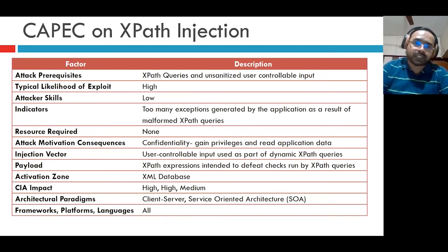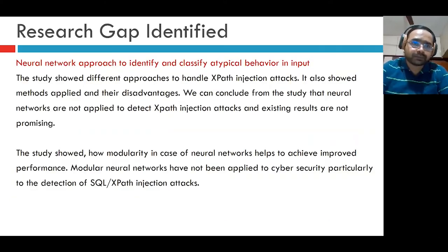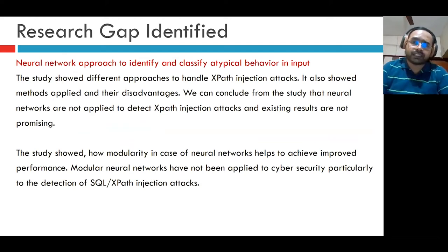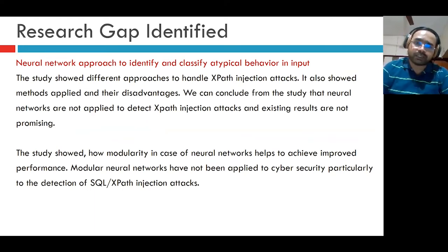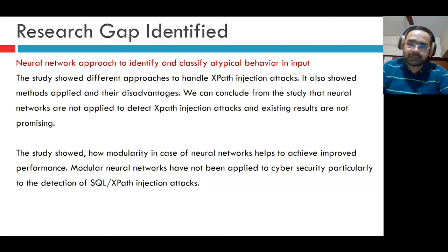This slide shows that the typical likelihood of exploit of XPath injection is high, whereas the attacker skills required are low. After reviewing prior papers, we found gaps: a neural network approach to identify atypical behavior in input had not been done. The study showed different approaches to handle XPath injection attacks and their disadvantages. We concluded that neural networks had not been applied to detect XPath injection attacks and existing results were not promising — for example, in some cases the response time was around 15 minutes, which is unacceptable for web applications. Modular neural networks had not been applied to cybersecurity, particularly for detection of SQL or XPath injection attacks.